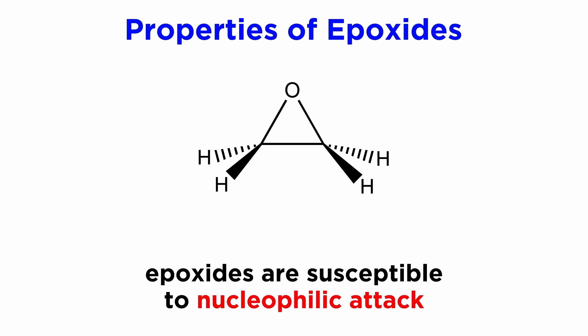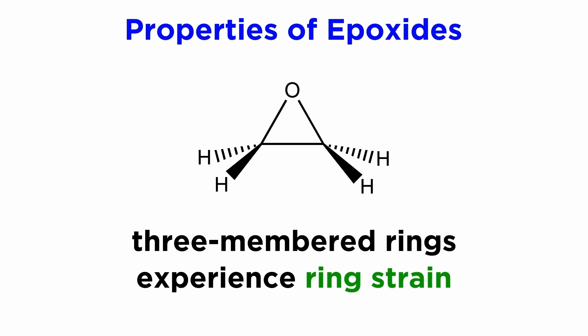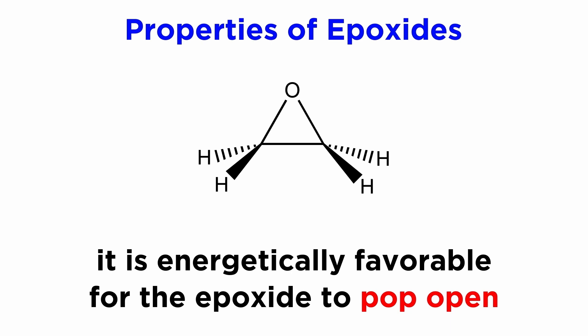First, epoxides are susceptible to nucleophilic attack. This may seem strange, because although carbon-oxygen bonds are polar, we do not see this activity with alcohols, but this situation is a bit different. With any three-membered ring, there is some amount of ring strain. This is because the geometry of the ring compresses bond angles beyond the 109.5 degrees that is typical for an SP3 center, since we know that triangles have 60 degree angles. So if we think of this like a compressed spring, we can see that it is energetically favorable for these to open up.